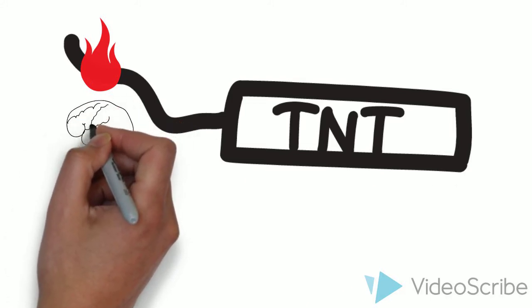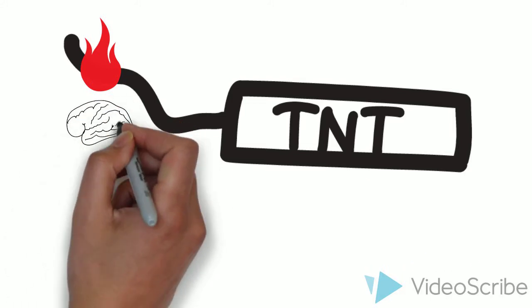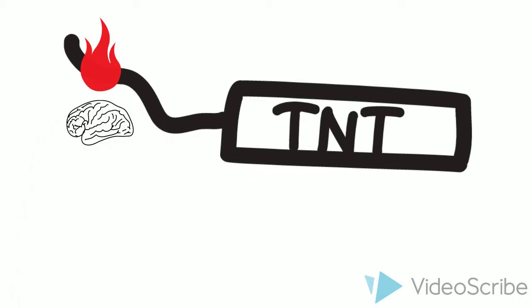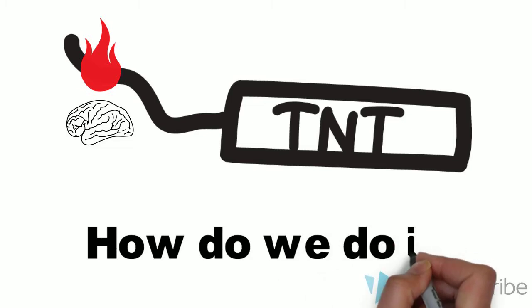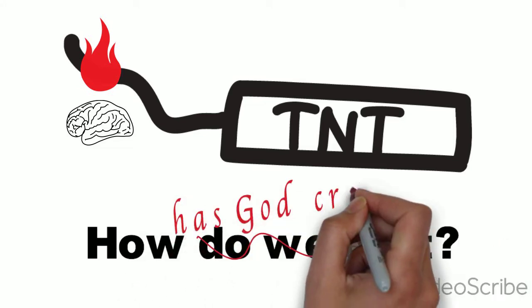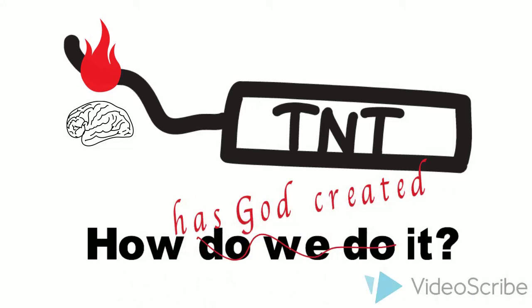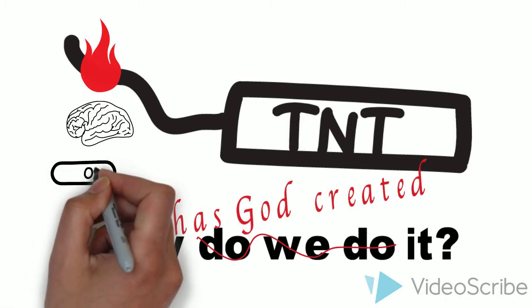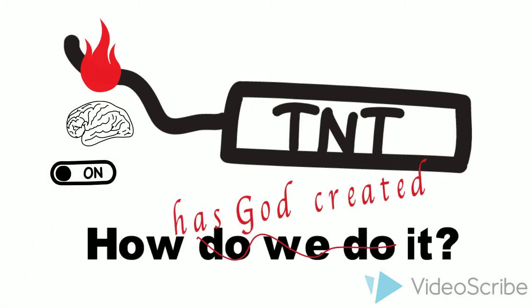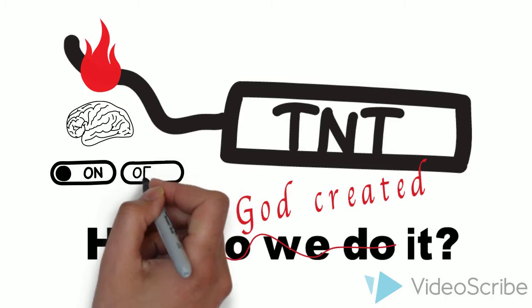This means, for example, the cells in our brain could start making digestive proteins, which would lead to all sorts of problems. The question is, how do we do it? Or better said, how has God so created it that our cells know which things to make at which time? In other words, how do our cells know how to turn on some genes and not others?